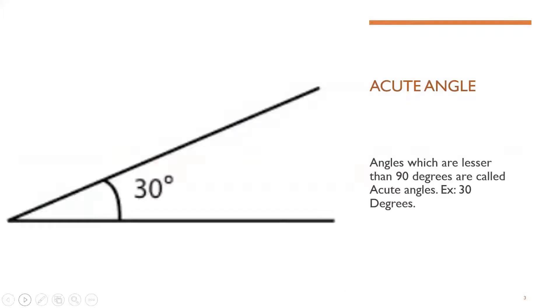Acute angle. Angles which are lesser than 90 degrees are called as acute angles. Example 30 degrees. It can even be 45 degrees, it can even be 56 degrees but it should be less than 90 degrees.